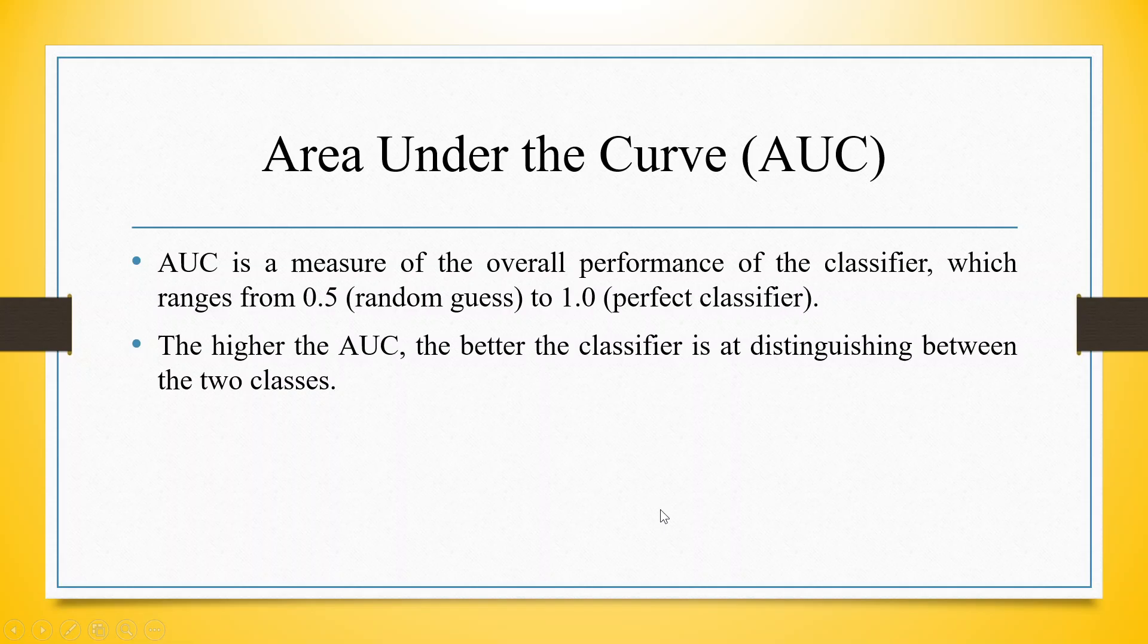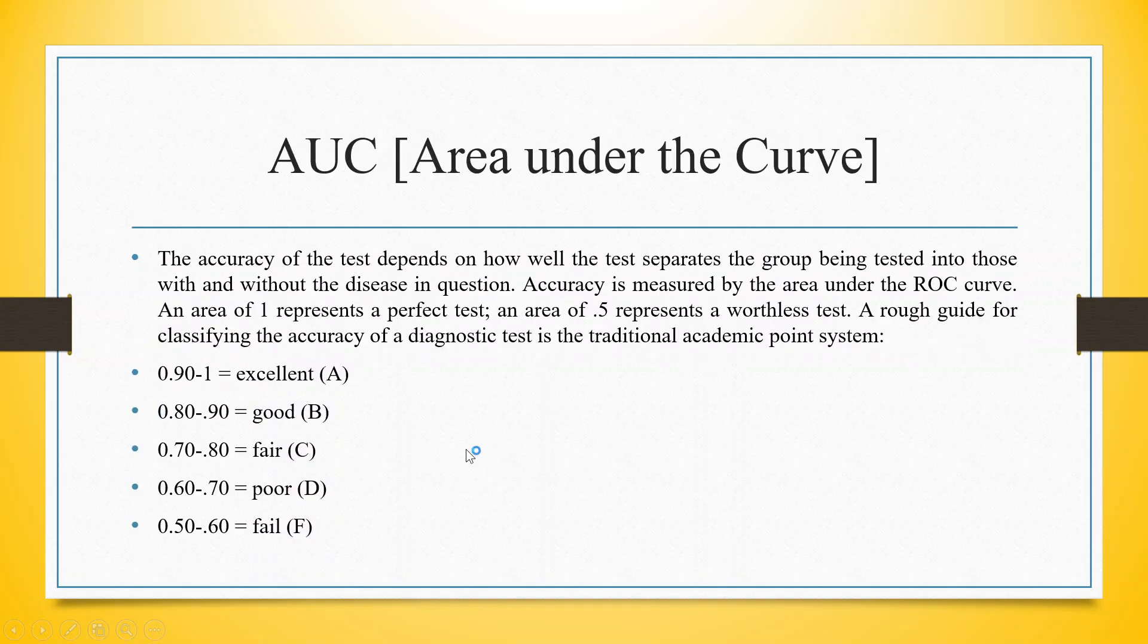AUC is a measure of the overall performance of the classifier which ranges from 0.5 to 1. The higher the AUC, the better is the classifier at distinguishing between the two classes. The accuracy of the test depends on how well the test separates the group being tested into those with and without the disease in question. Accuracy is measured by the area under the ROC curve. An area of 1 represents a perfect test. An area of 0.5 represents a worthless test.